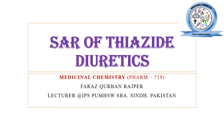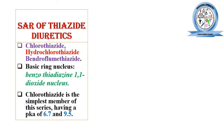The SAR of thiazide diuretics covers different drugs in this class, such as chlorothiazide, hydrochlorothiazide, and bendroflumethiazide. These drugs share the same mechanism of action but differ by the presence or absence of various functional groups. The basic ring nucleus present in these diuretics is the benzothiadiazine 1,1-dioxide. Chlorothiazide is the simplest member, with pKa values of 6.7 and 9.5.